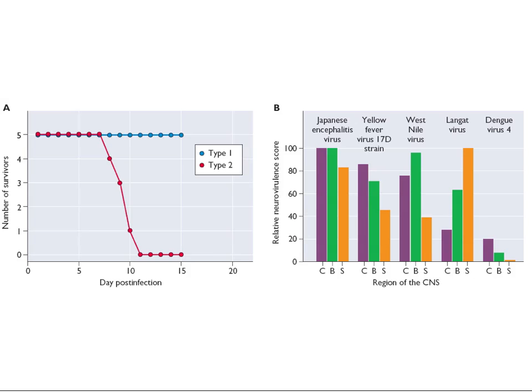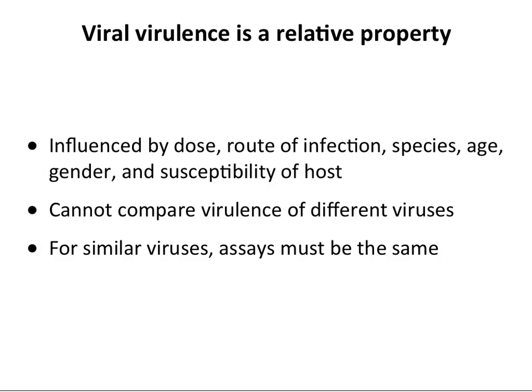Here are two experimental results. On the left is a survival graph with days post-infection on the x-axis. Mice infected with type 1 poliovirus are all surviving after 15 days, whereas type 2 are all dead by 15 days. On the right is a neurovirulence score example using flaviviruses, looking at lesions in the cerebellum, cerebrum, brainstem, and spinal cord. Dengue has very few CNS lesions compared to Japanese encephalitis virus, showing both virus-specific and tissue-specific differences in virulence.